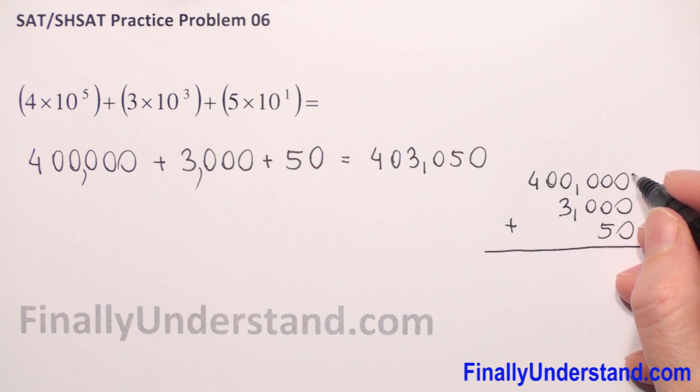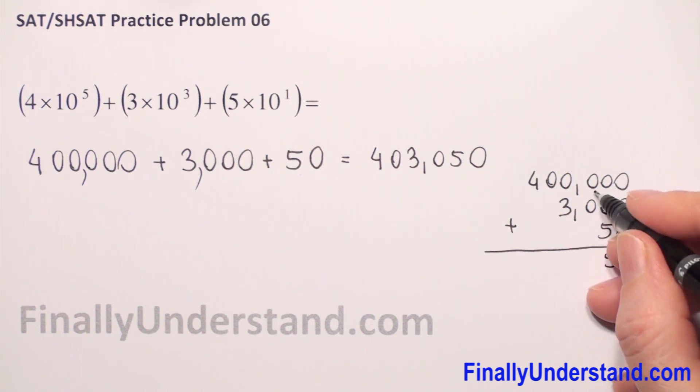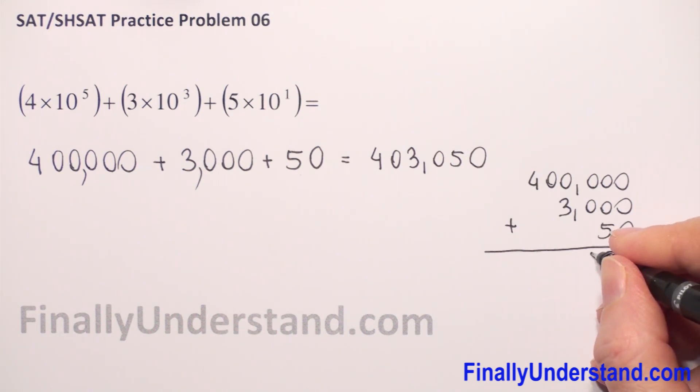So we start from the left side. We just add last column. So 0 plus 0 plus 0 is 0. 0 plus 0 plus 5 is 5. 0 plus 0, and we have empty space, so this is 0. So we have 0.